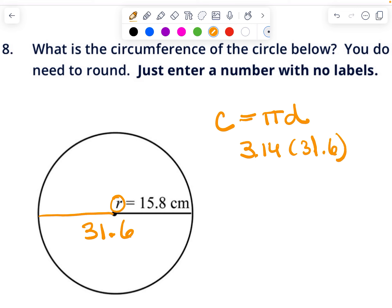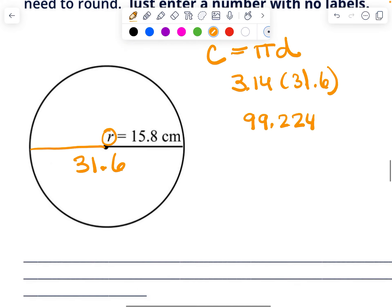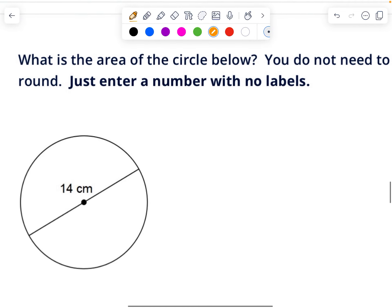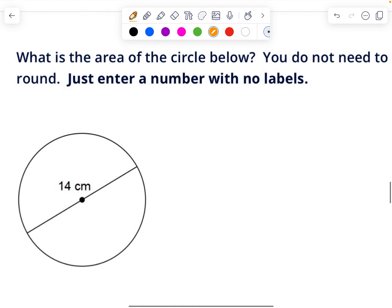The area is going to be pi r squared. They don't give us the radius though, they give us the diameter. But if all the way across is 14, then halfway across is 7. So 3.14 times 7 squared, which is 153.86. Make sure you're reading the directions. It says do not round and just enter a number, so don't put centimeters or anything like that in your answer.